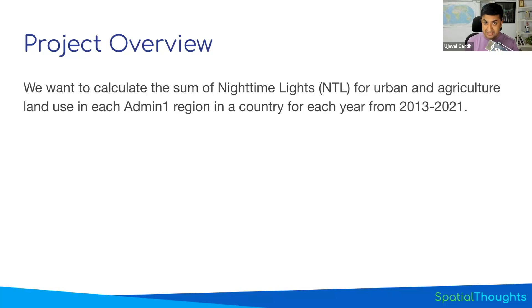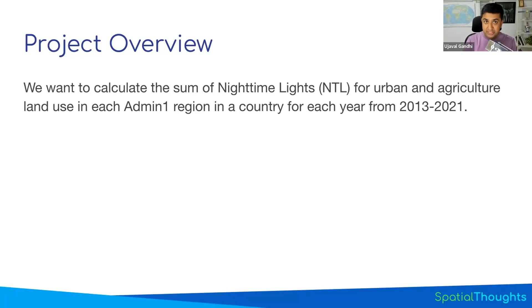We'll compute sum of lights in an admin region for urban regions as well as agriculture regions for each year, and we'll do the same for every admin-one region in a country. This sounds like a very complex thing to do, and if you're a beginner in Earth Engine, you might find it very challenging to attempt. But once you learn the process, you'll know how to break down this problem and build each part, then put them together to do this analysis — and this will help you in similar problems in your own projects.